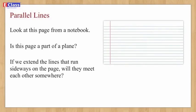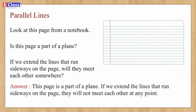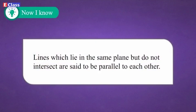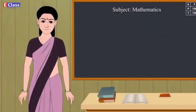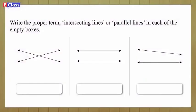Parallel lines: look at this page from a notebook. Is this page a part of a plane? If we extend the lines that run sideways on the page, will they meet each other somewhere? Answer: this page is a part of a plane. If we extend those lines, they will not meet each other at any point. Lines which lie in the same plane but do not intersect are said to be parallel to each other.